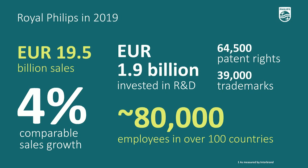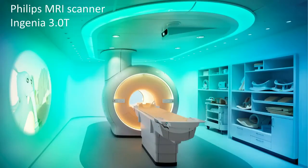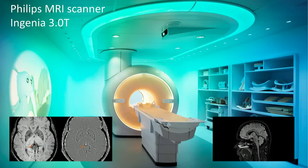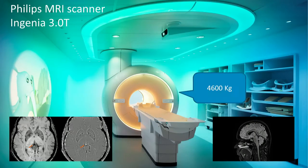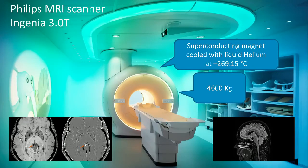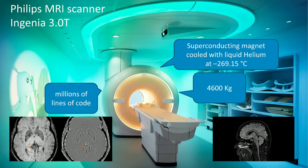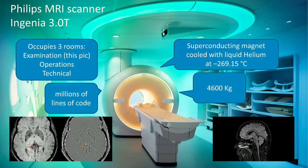Let me focus on the type of products in scope for this presentation. This is a Philips magnetic resonance imaging scanner, the Ingenia 3.0 Tesla — an incredible machine. It makes high-resolution images of the human body without harmful radiation. It's a complex machine: massive, weighing 4,600 kilograms, with a superconducting magnet cooled with liquid helium at minus 269 degrees Celsius. It's full of millions of lines of software code and occupies three rooms — an examination room, a technical room full of custom hardware, and supporting machinery.